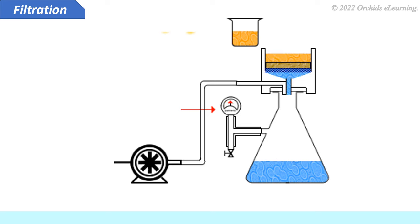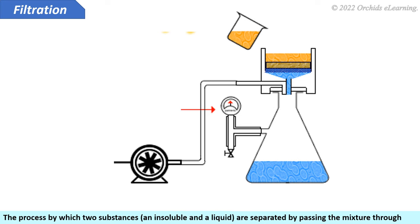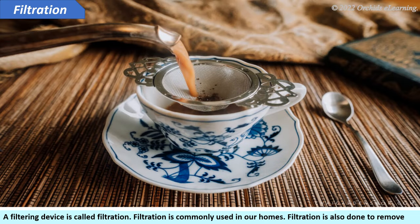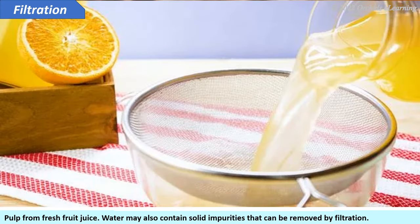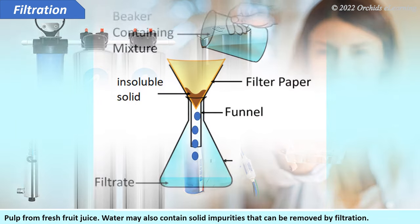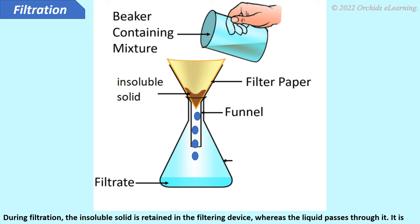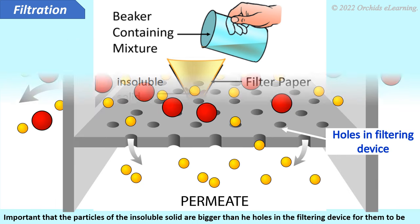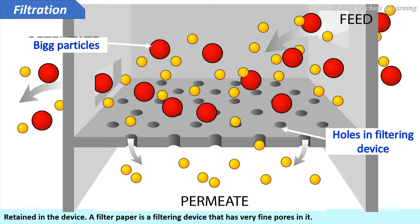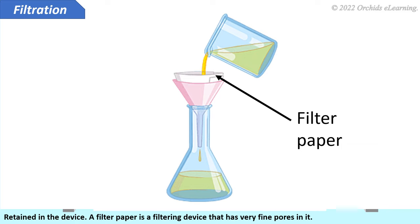Filtration. The process by which two substances — an insoluble solid and a liquid — are separated by passing the mixture through a filtering device is called filtration. Filtration is commonly used in our homes, for example to remove pulp from fresh fruit juice. Water may also contain solid impurities that can be removed by filtration. During filtration, the insoluble solid is retained in the filtering device whereas the liquid passes through it. The particles of the insoluble solid must be bigger than the holes in the filtering device. A filter paper is a filtering device that has very fine pores in it.